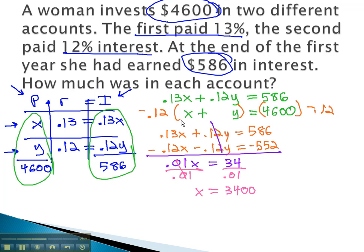We still need to find y, and we can find that by plugging our x-value into that second equation. x, or 3400, plus y, equals 4,600. Subtracting 3400 from both sides, we get y equals 1,200.